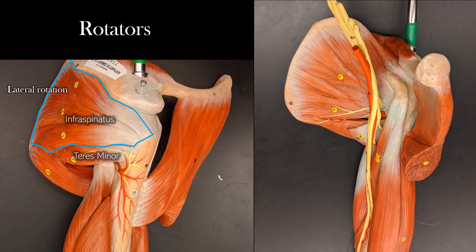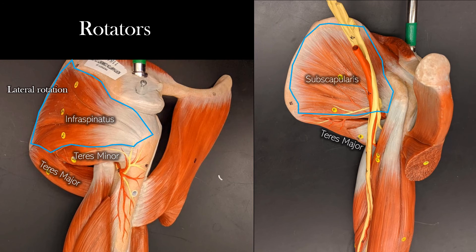Below the teres minor is the teres major, which you can also see on the underside. The teres major is right below the subscapularis. When you see the infraspinatus and teres minor, and then you see the teres major crossing over to the opposite side, that's the hint that it won't do lateral rotation. The subscapularis and the teres major are both responsible for medial rotation.